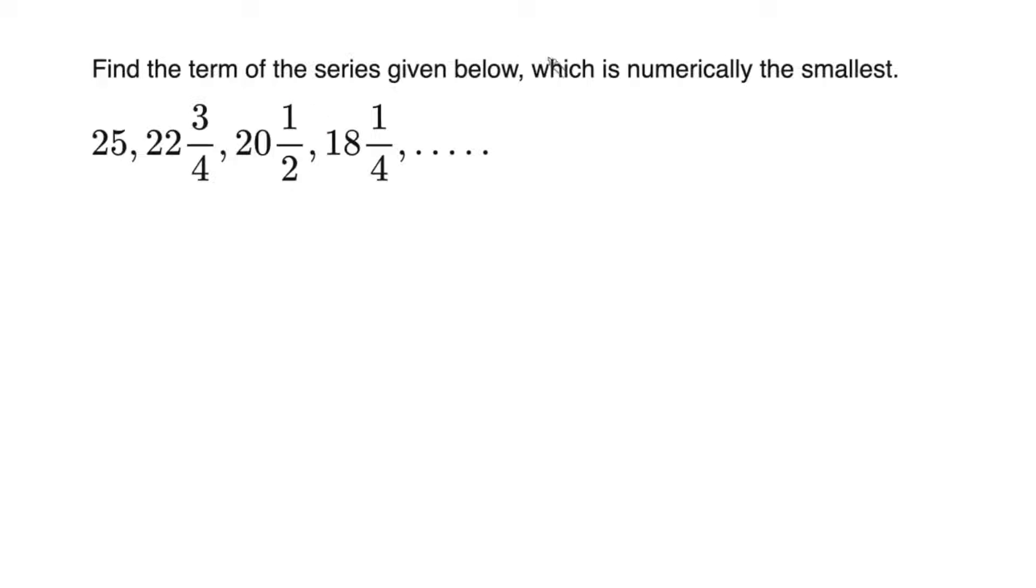Find the term of the series given below, which is numerically the smallest. The given sequence is 25, 22 3/4, 20 1/2, 18 1/4, and so on.